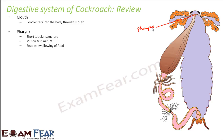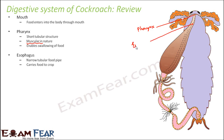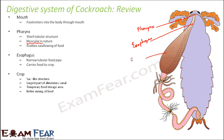The entire foregut is lined by cuticle, a waxy layer, to prevent loss of water. The next part after the pharynx is the esophagus, which is the food pipe. Its function is simple — it carries the food to the crop. It acts as a medium to transport the food to the next organ.